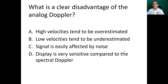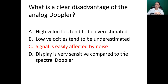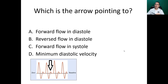Which statement is a clear disadvantage of the analog Doppler? A — high velocities tend to be overestimated. B — low velocities tend to be underestimated since the signal is easily affected by noise. C — less sensitive compared to spectral Doppler. The answer is C — the signal is easily affected by noise. Remember, high velocities tend to be underestimated, low velocities tend to be overestimated, and the display is less sensitive compared to spectral Doppler.